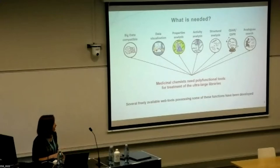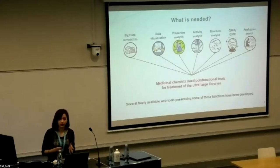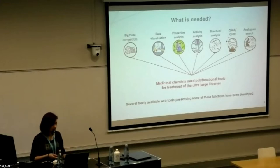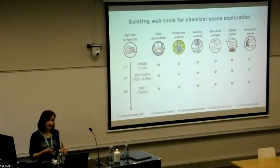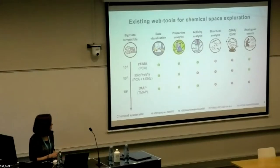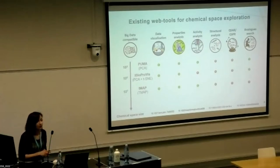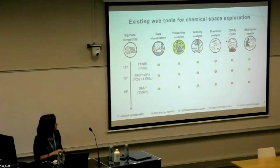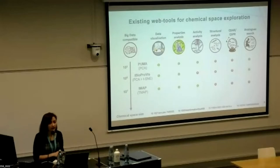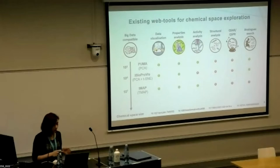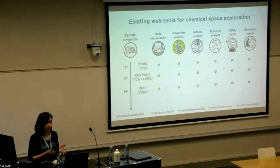Structural analysis, prediction of different biological activities or properties, and analog search are also useful. There exist some web-based tools for this already, however they all depend on the number of compounds they can show. For example, PUMA can handle only thousands of compounds and is the most multi-functional one, but when you increase the number of compounds, the functionality drops.